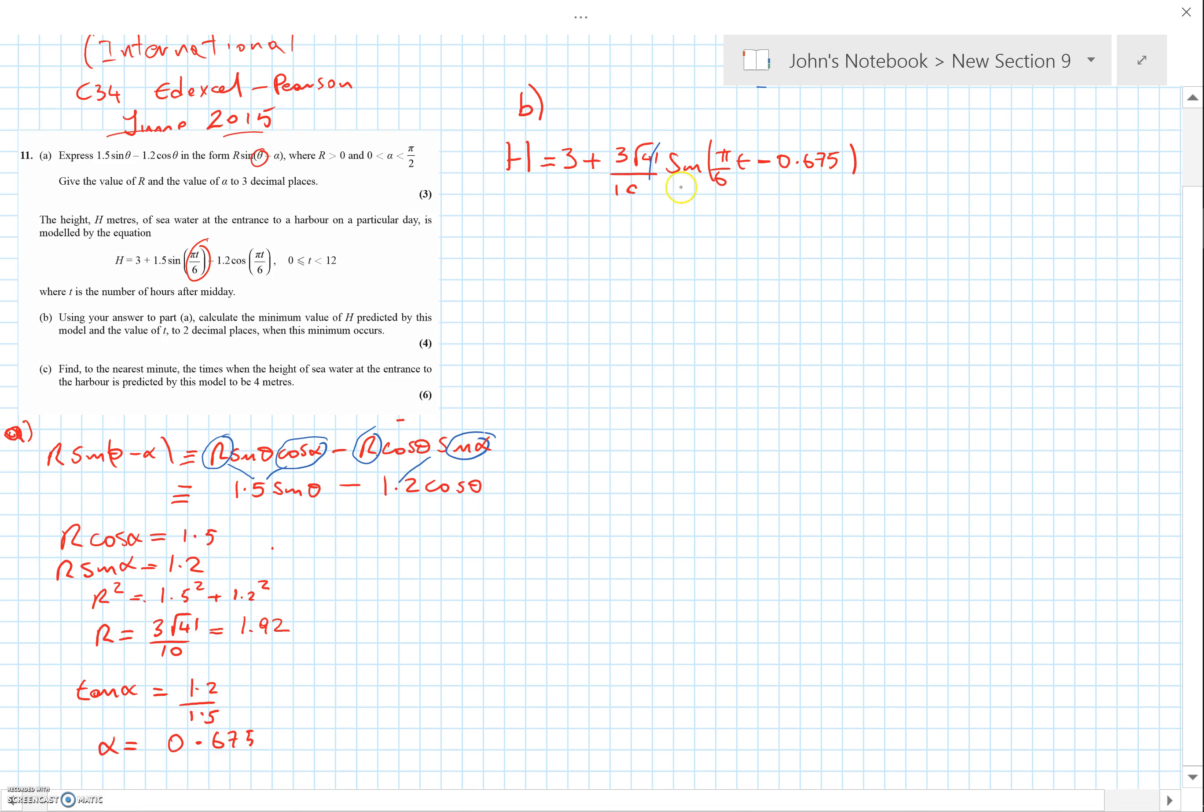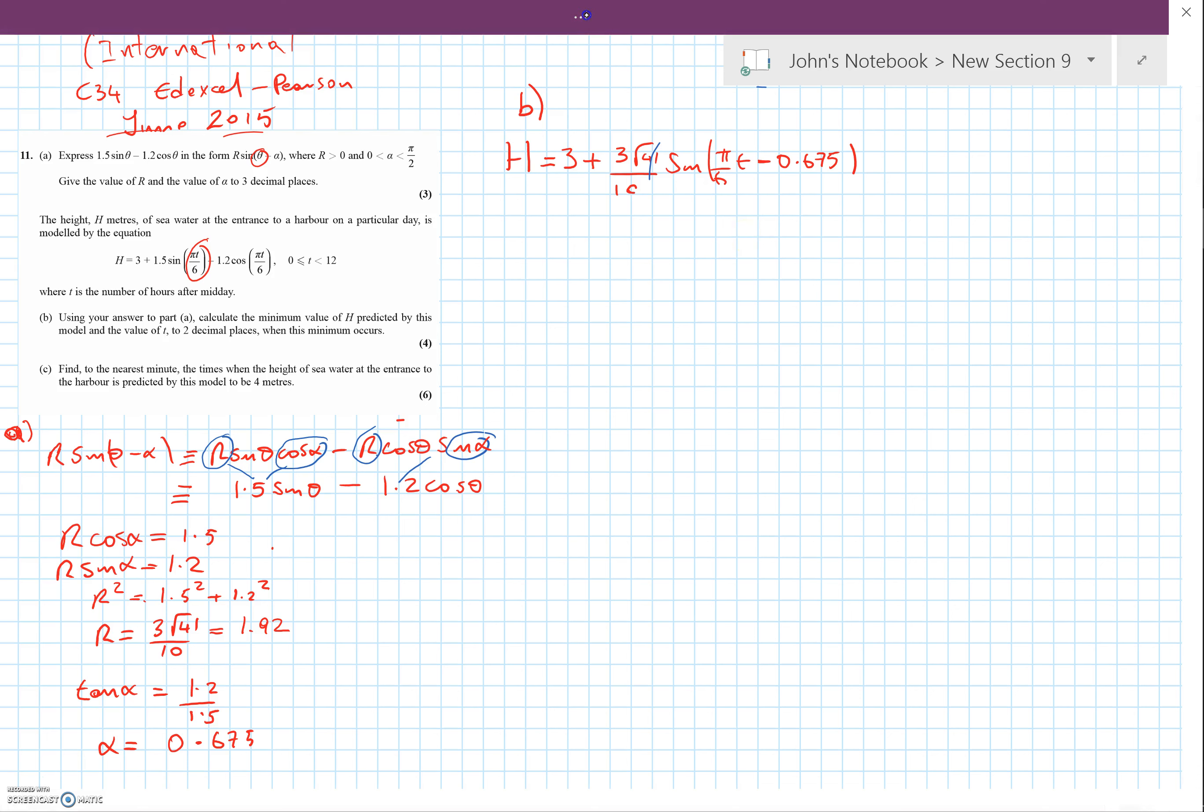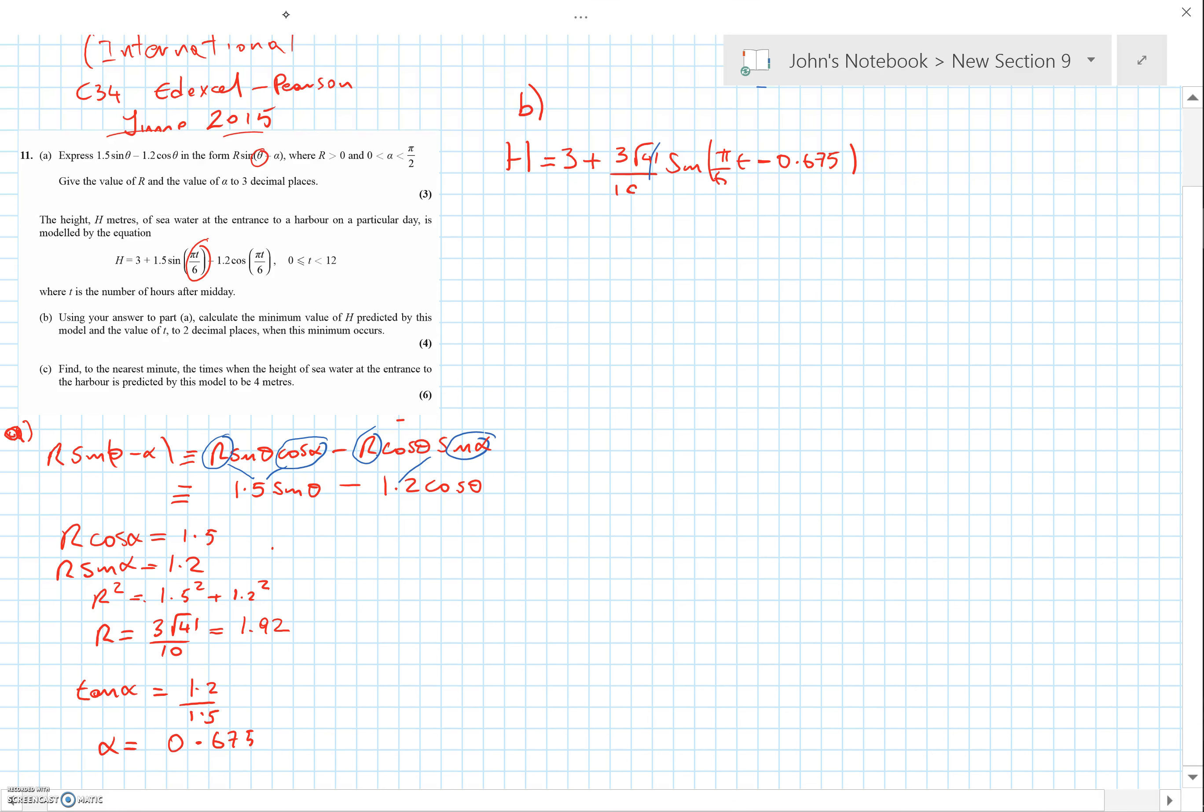That's going to occur when the sine part is minus one. So let's work with that. When that's minus one, we can say H_min equals 3 minus 3√41/10. If you work that out on your calculator, you'll get 1.08, which I'll quote to three significant figures. That's the answer for H_min.